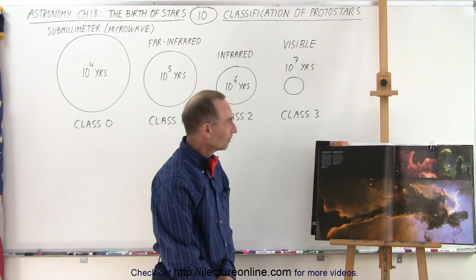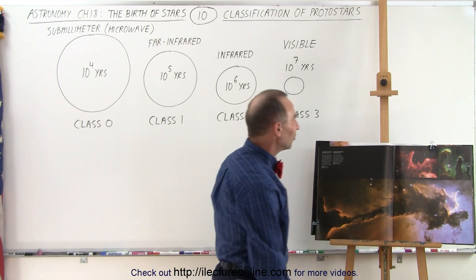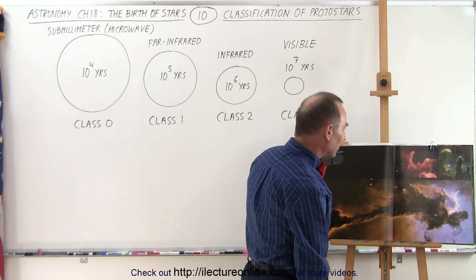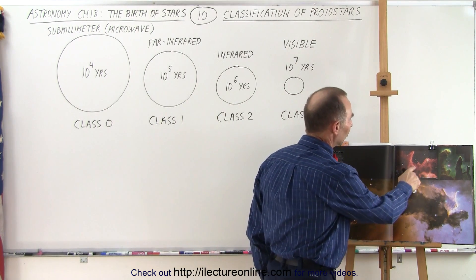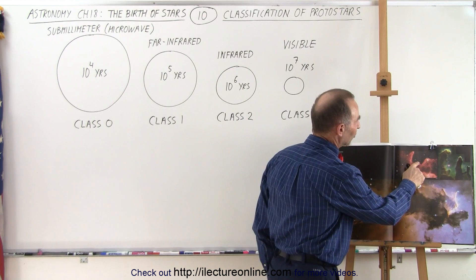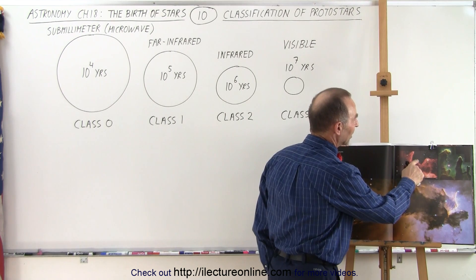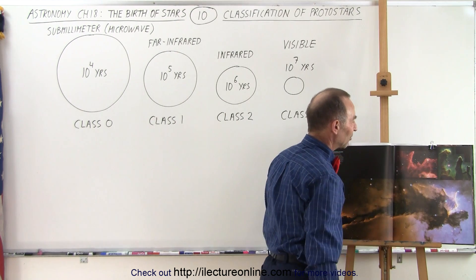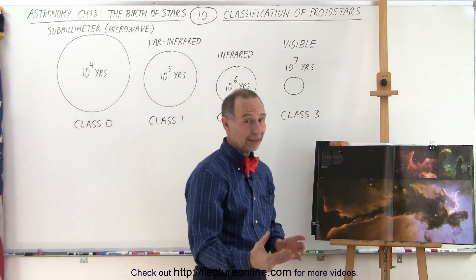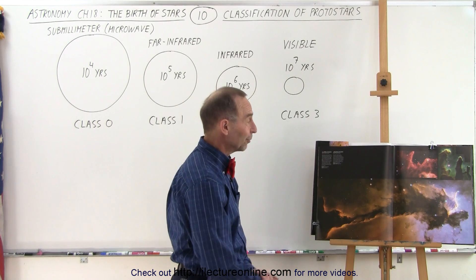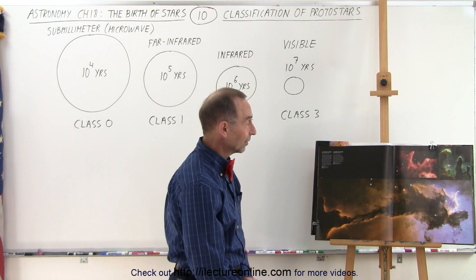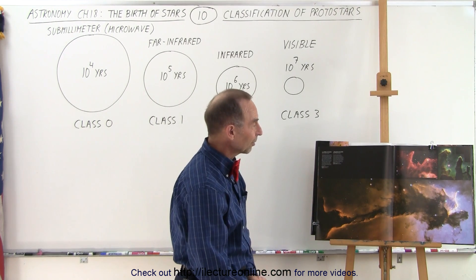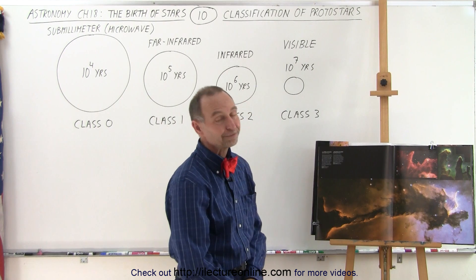Student: What about the red one? Instructor: The red one is a different nebula. I don't know the name of that nebula, but you can see these finger-like structures where at the end you probably have the formation of a star. You can tell by using an infrared telescope to see if there's indeed radiation coming from that place.